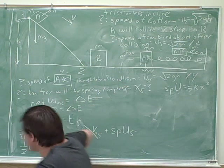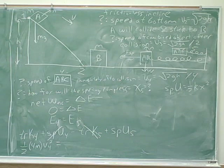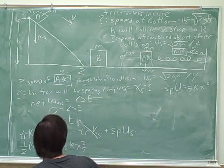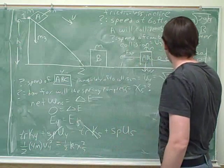And then on your right-hand side, you had 1 half k x 5 squared, 1 half k.